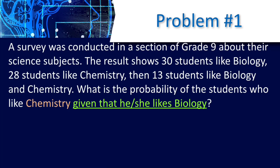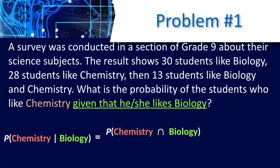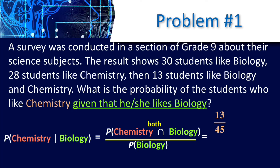Example, problem number 1: a survey was conducted in a section of grade 9 about their science subjects. The results show 30 students. This is the probability of chemistry given that biology has happened, equal to P(chemistry and biology) all over P(biology). Out of 45 students total (30 + 28 − 13), 13 liked both. So the answer is 13 over 45 divided by 28 over 45, which equals 13 over 28.